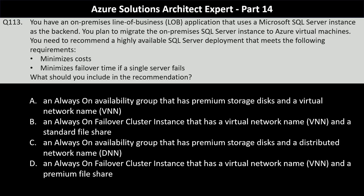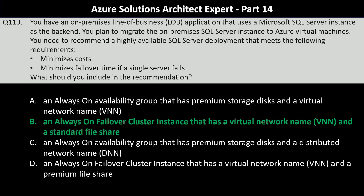The correct answer is option B. An Always On failover cluster instance with a standard file share is the most cost-effective compared to other options that require premium storage. FCI provides automatic failover with near-zero downtime because the SQL Server instance runs as a single logical instance. The virtual network name ensures clients connect to the same logical server instance regardless of which node is active.